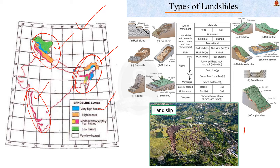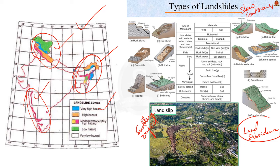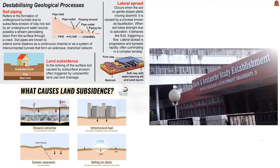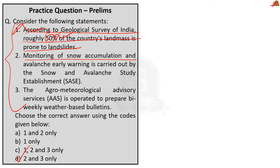You should understand the sharp difference between landslides, landslips, and land subsidence. A landslip is a slow, continuous movement of materials down a slope, while a landslide is a sudden, rapid movement. Land subsidence is defined as a gradual settling or sudden sinking of the earth's surface due to removal or displacement of subsurface earth materials — an example is the Joshimath incident. So the first statement is incorrect.